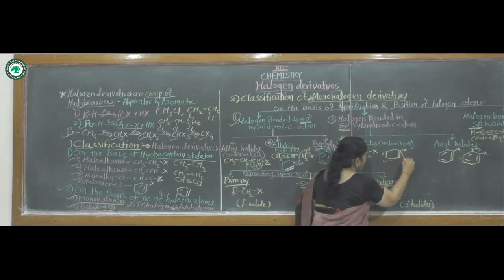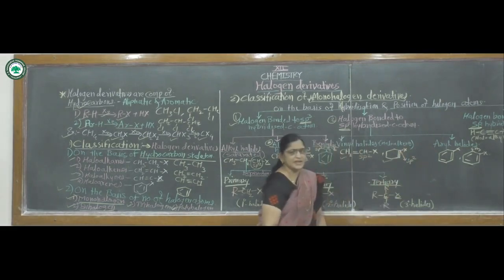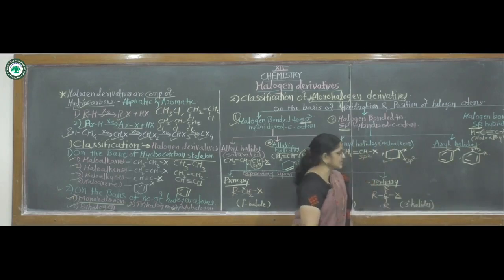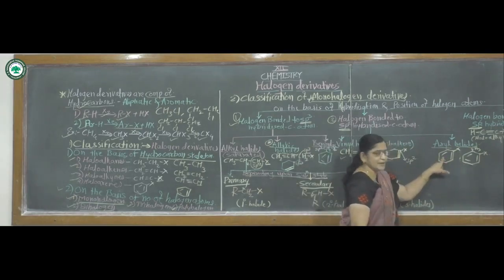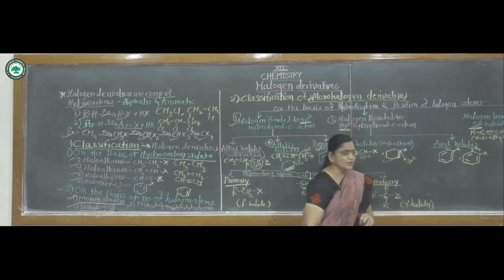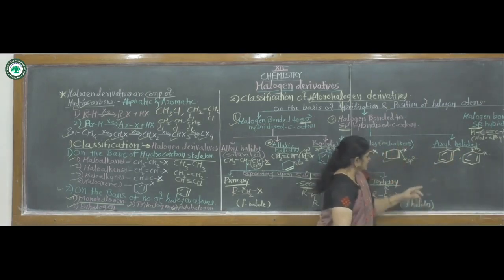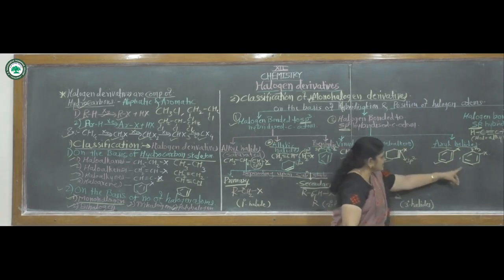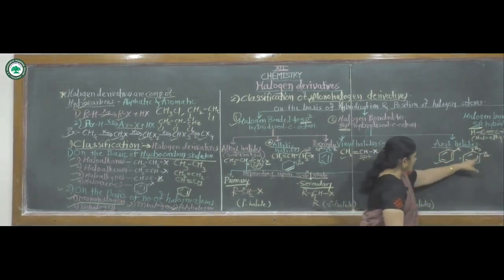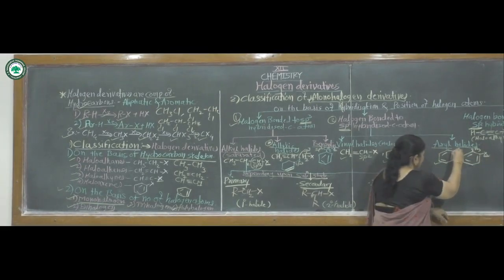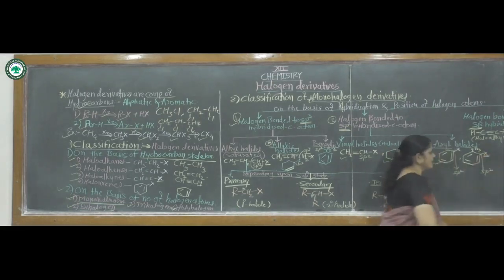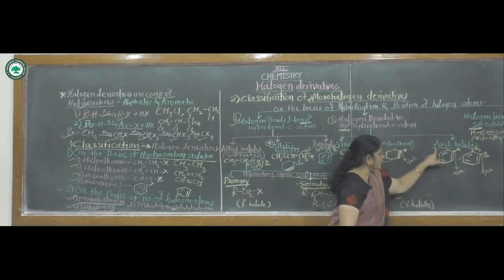The second class under sp2 hybridized carbon is aryl halides. In aryl halides, the halogen atom is directly bonded to an aromatic compound or benzene nucleus. In these examples, the carbon to which the halogen is bonded is an sp2 hybridized carbon atom. Such compounds are called aryl halides.